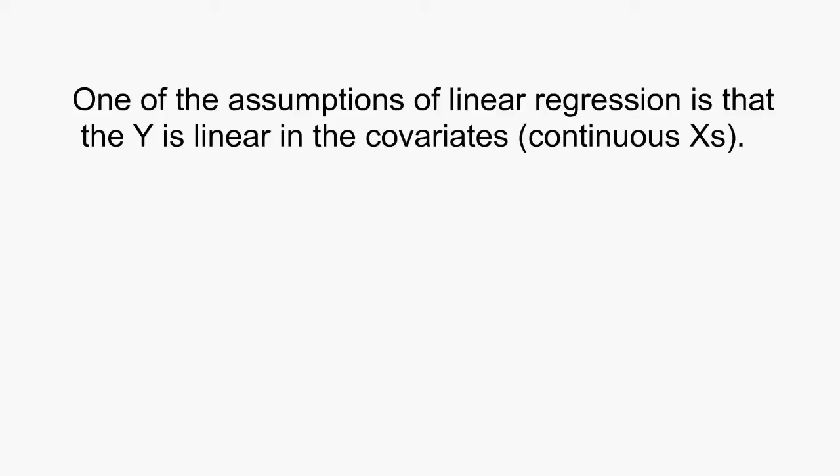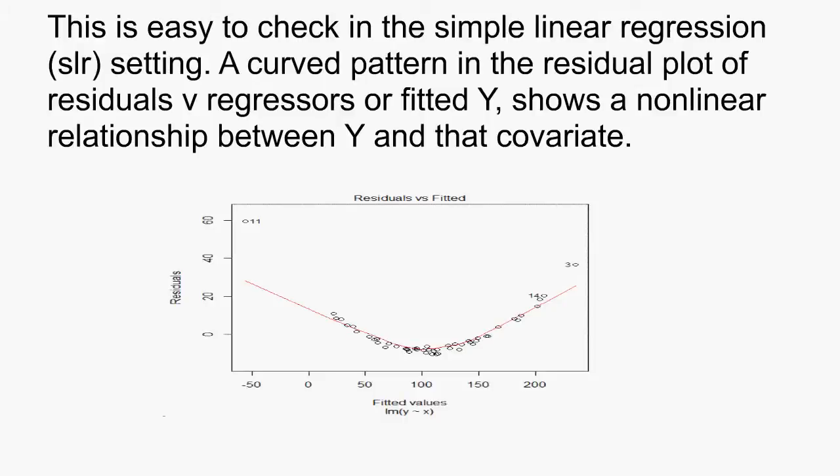One of the assumptions of linear regression is that the response Y is linear in the covariates. This is easy to check in simple linear regression — a curved pattern in the residual plot of residuals versus regressors or fitted Y suggests a nonlinear relationship. But the residual plot is less effective in revealing nonlinearities in MLR. This is when the partial residual plot is useful.